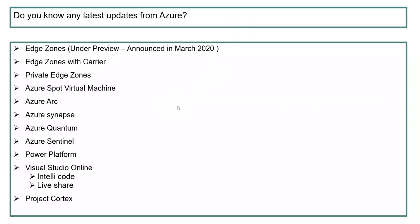The next question: do you know any latest updates from Azure? This is commonly asked in Azure interviews to check whether you are keeping up with the latest developments. There are plenty of things — Edge Zones, Edge Zones with Carrier, Private Edge Zones, Azure Spot Virtual Machines, and more. Please go through my video on Azure updates to learn about each feature in detail.